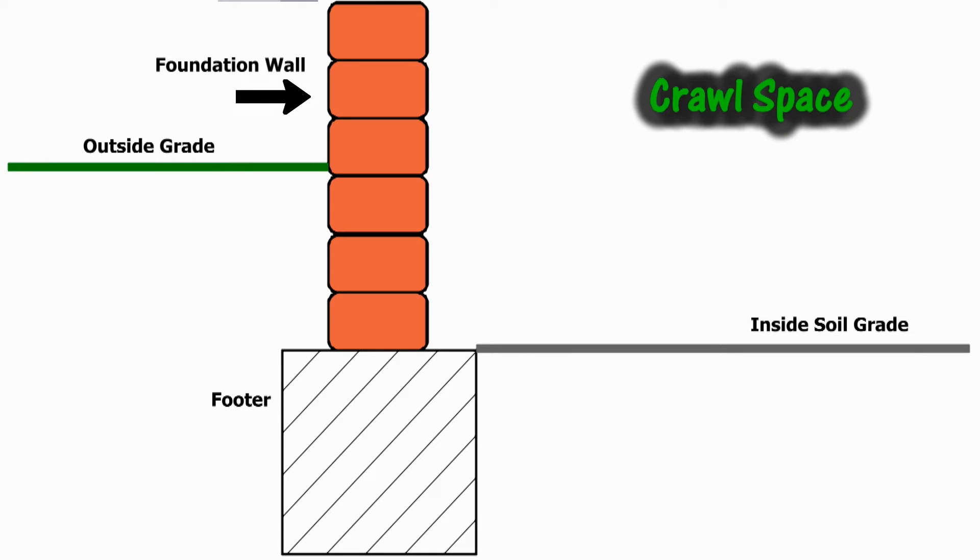First, let's look at the drawing. You have a foundation wall, which is the wall to your crawl space. You have a footer, which is solid concrete down deep in the ground. The outside grade is the level of soil on the outside of the wall.